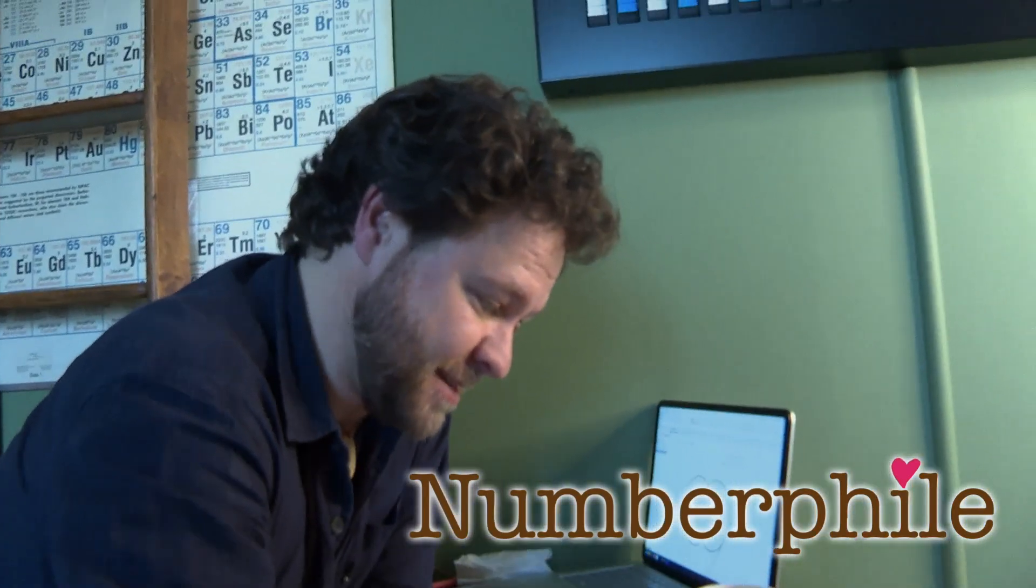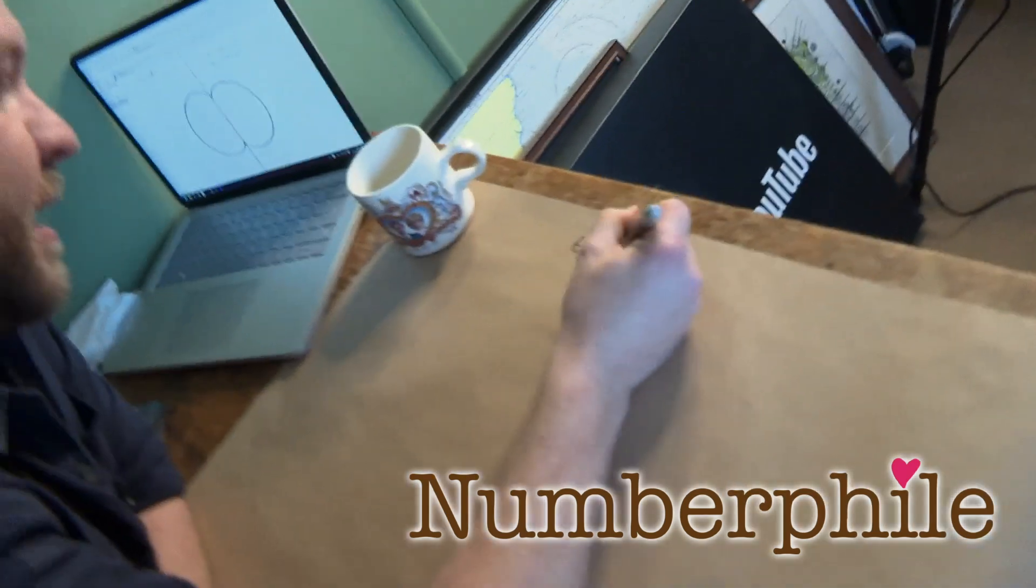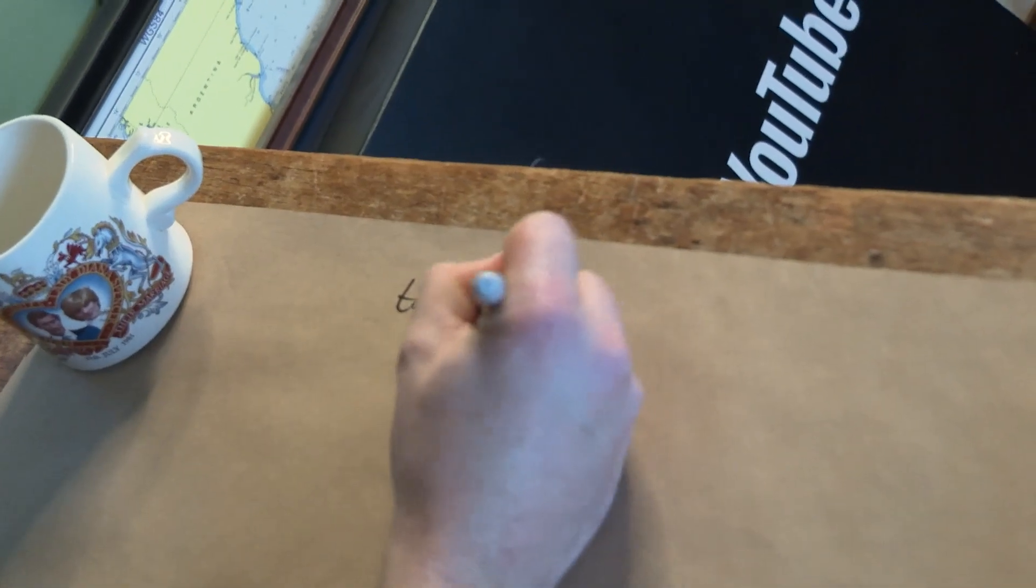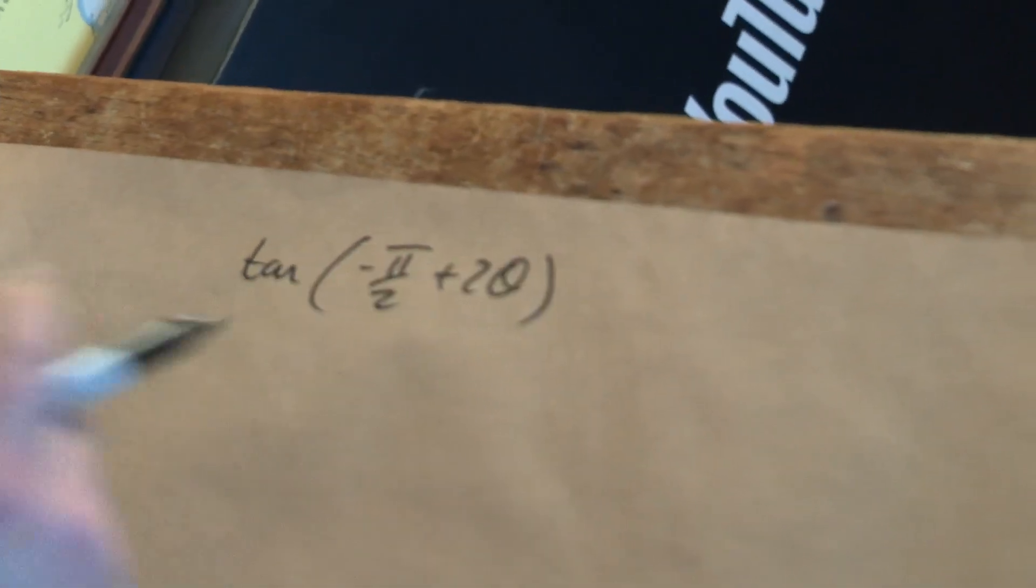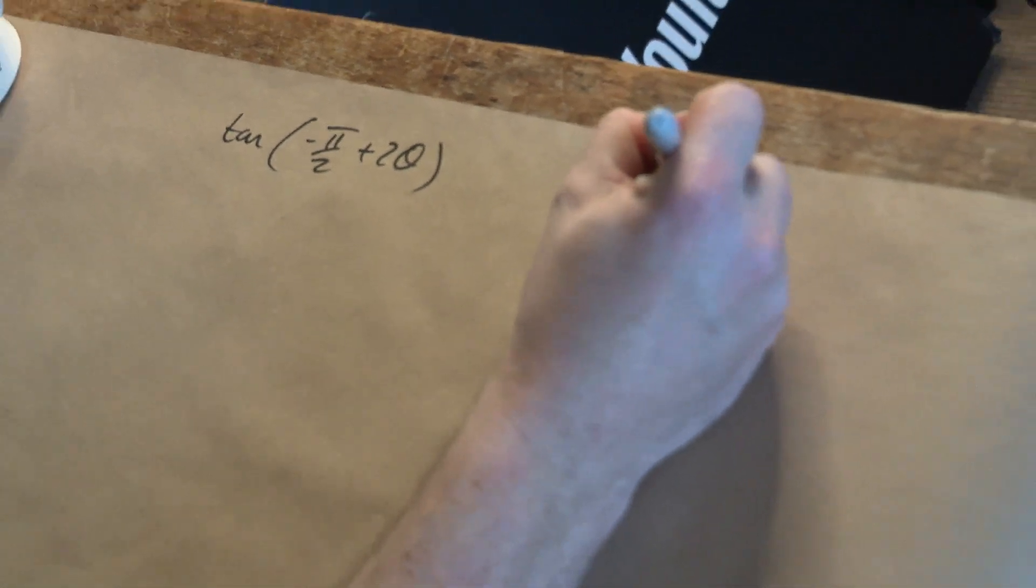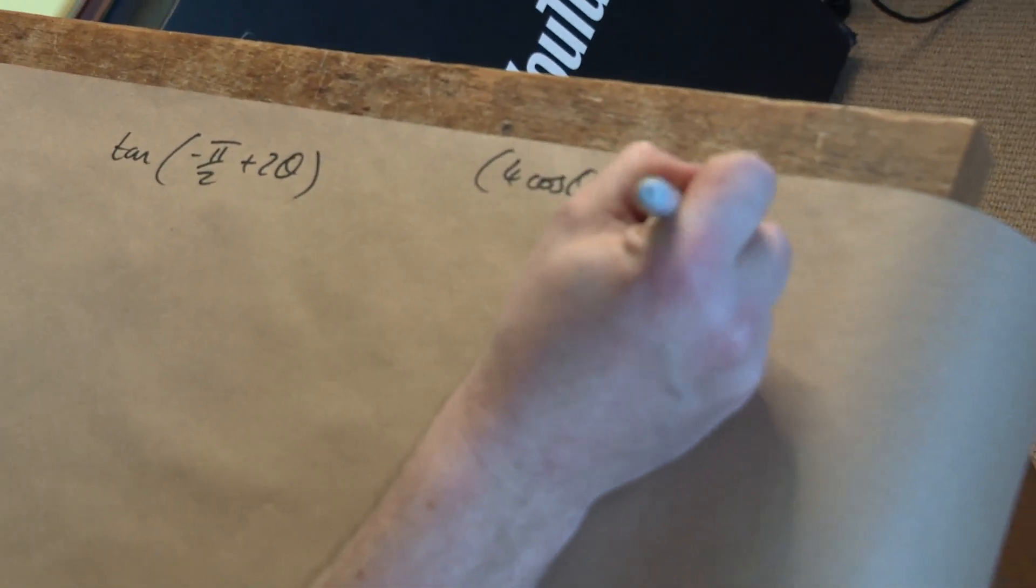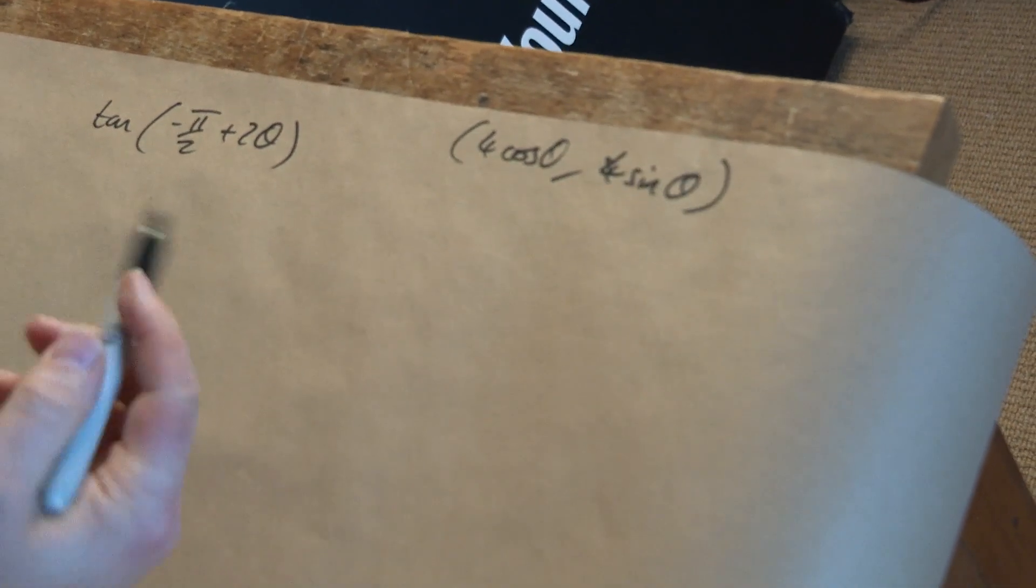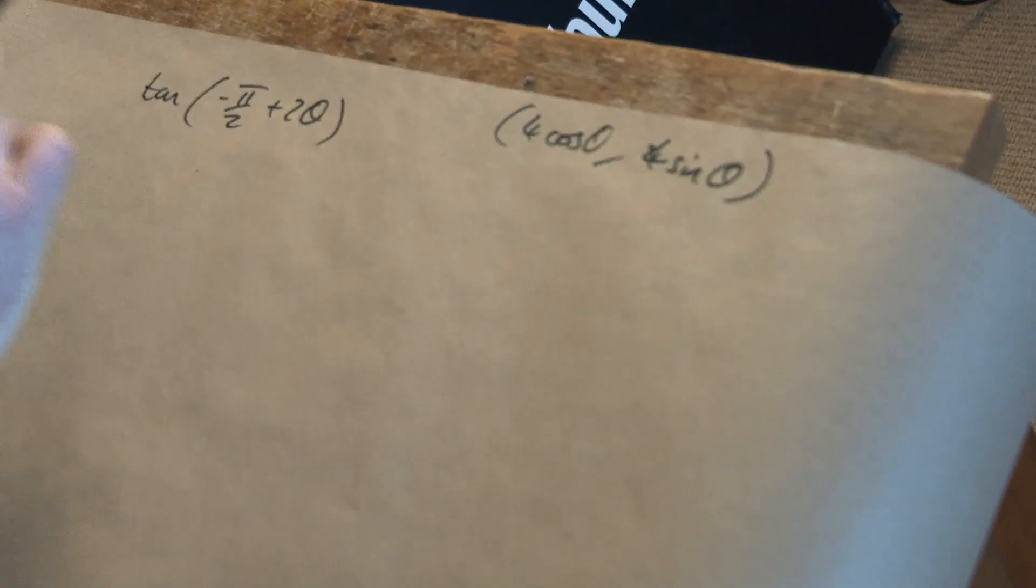The gradient of that reflected ray we just said was tan negative pi by 2 plus 2 theta, what a horrible thing, and it's at a point 4 cos theta, 4 sine theta. That's all the information I need to get an equation of a line. I've got a point and I've got a gradient, I've got everything I need.